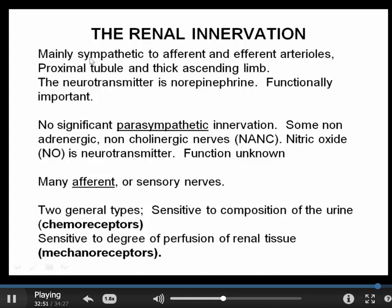In addition to the efferent control by the sympathetic nervous system, there are also a lot of afferent or sensory nerves. There are two types: chemoreceptors, which respond to the composition of the urine, and mechanoreceptors, which respond to the degree of perfusion of the renal tissue. Anyone who has ever passed a kidney stone will know that these mechanoreceptors are very sensitive.